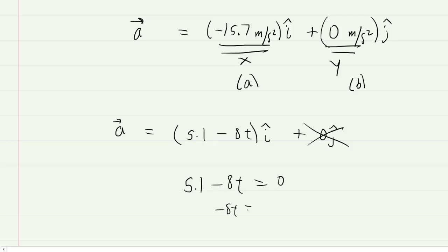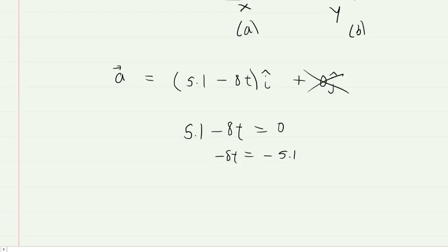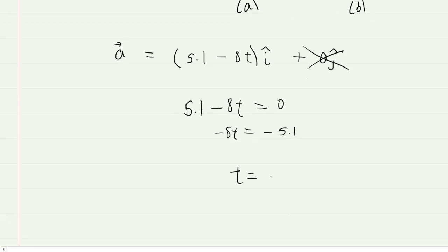Subtract the 5.1 to the other side, and then divide both sides by negative 8. And when you do that, you will get a time value of approximately 0.64 seconds. So this would be the time at which the acceleration would momentarily equal 0.